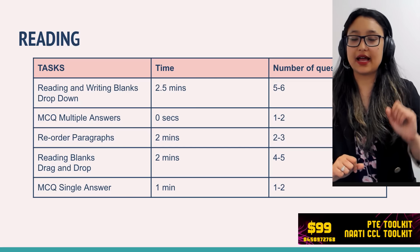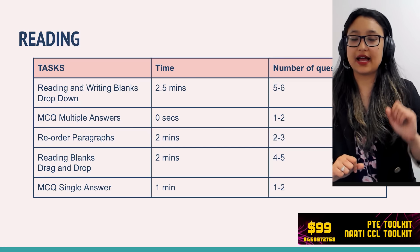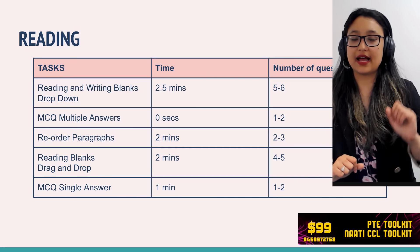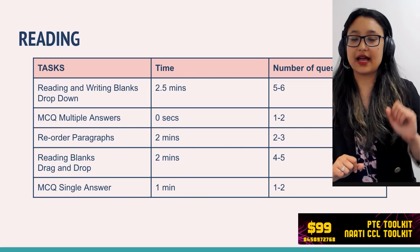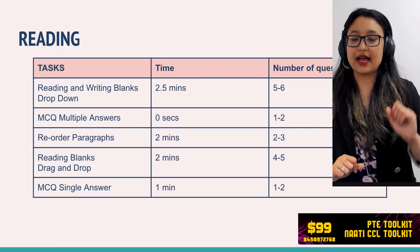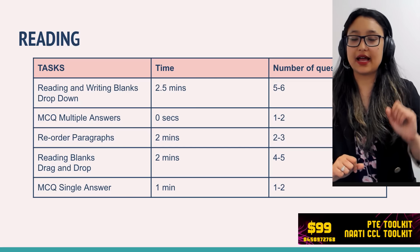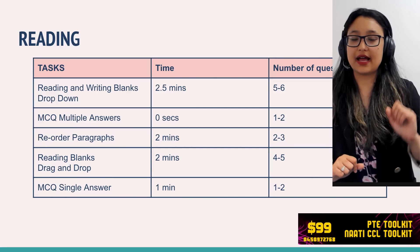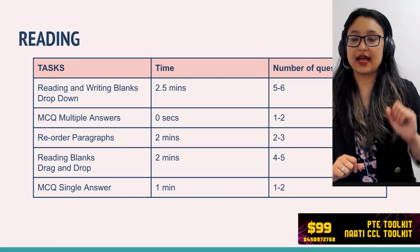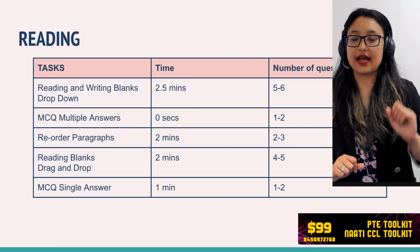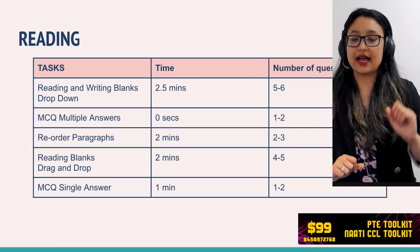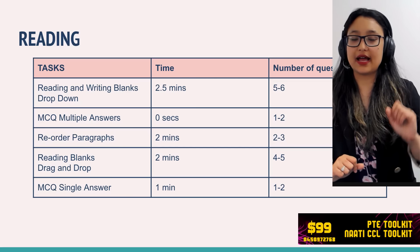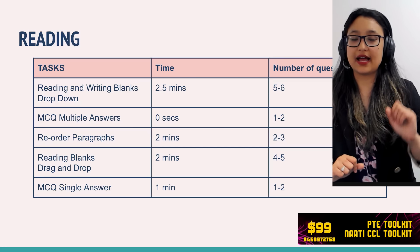The reading section has five question types. The first and most essential is reading and writing fill in the blanks — especially important if you're targeting a score of 79. Spend a maximum of 2.5 minutes per task, with five to six tasks total. The second type is multiple choice multiple answer — spend zero seconds on this. Just click a random answer and move on. There is negative marking, but even skipping it entirely you can still score 90 in reading.